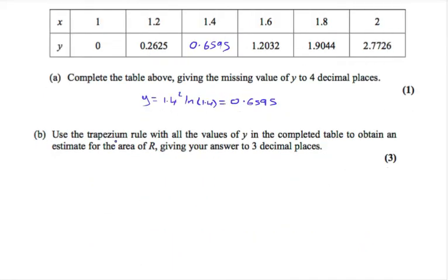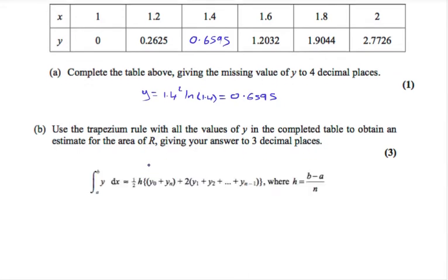Part B says use the trapezium rule with all the values of y in the completed table to obtain an estimate for the area of R, giving your answer to three decimal places. In the C2 section of the formula booklet, we're given the trapezium rule in this form. a and b are the limits of our integral.